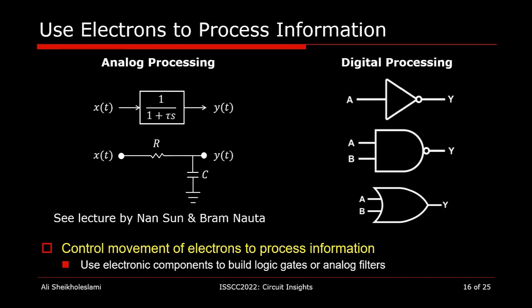Let us now see how we can use electrons to process information. On the left, we have an input signal, a function of time shown as x of t, and we would like to process this signal to remove its high-frequency component through a transfer function. We can represent x of t with a voltage source, bringing electrons to the input node and allowing them to go through a resistor and charge or discharge a capacitor, performing the exact processing we wish. In digital processing, we create a voltage at the input node with a bunch of electrons and then influence a different bunch of electrons at the output node, creating an output voltage for any logical operations we wish to perform.